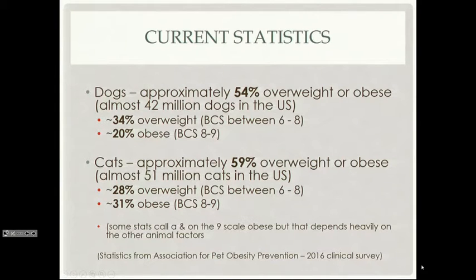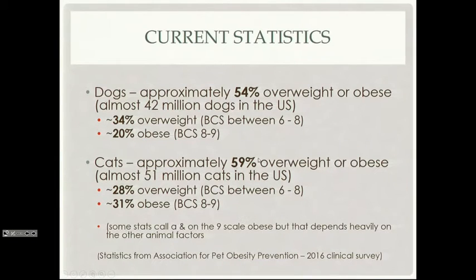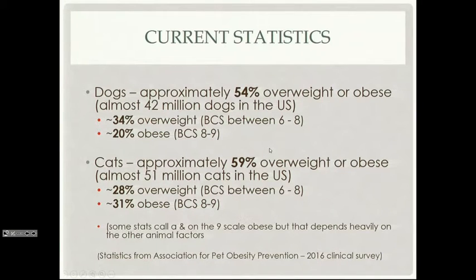With cats the problem is even more severe. Roughly 28% are overweight and roughly 31% are obese. When you compare the dog and cat numbers, the obesity figures are the ones that should jump out at you — there are more obese cats in the United States than there are overweight cats. These numbers are probably even higher because we typically don't quantify animals as overweight or obese in their first year of growing, so a percentage of the population isn't even being counted.